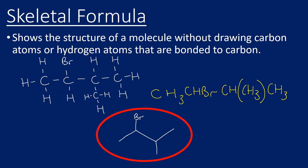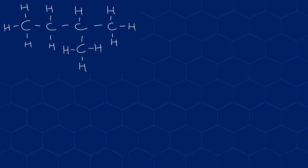The focus for this video is the skeletal formula. What this does is show the full structure of a molecule without having to draw all those carbon atoms or any of the hydrogens bonded to those carbons, making drawing the structure much quicker. If you study chemistry at any further level after college, you will certainly use skeletal formula. The best way to explain this is to walk through a couple of examples.